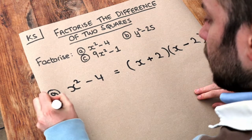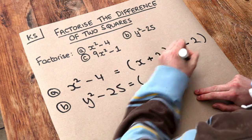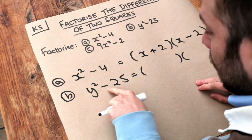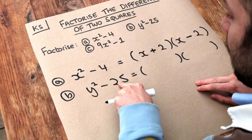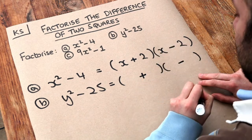What about the second one? We've got y squared minus 25. We have two brackets again. This is a difference of two squares because it's a subtraction of two squared things. We put a plus in the middle of one bracket, minus in the middle of the other.